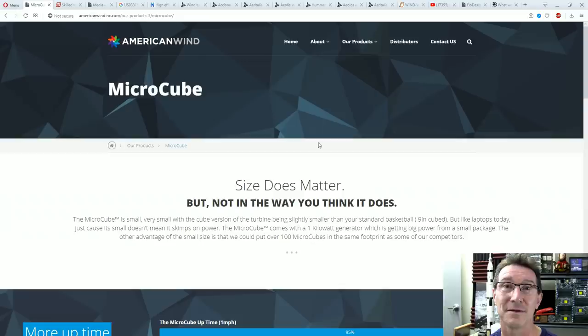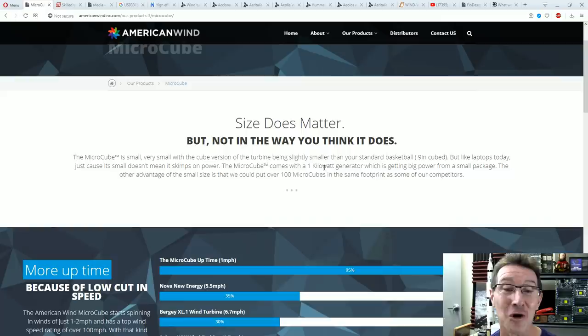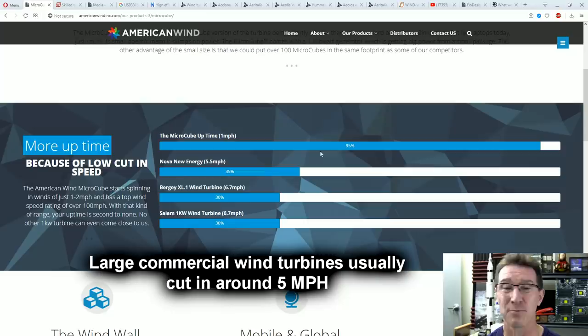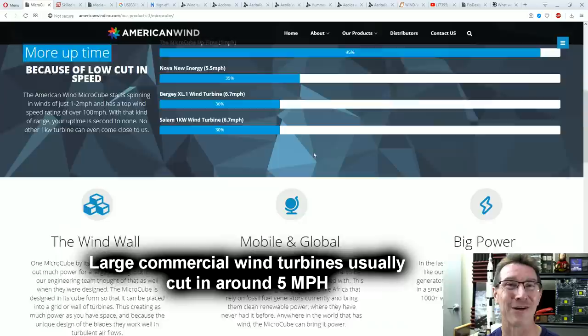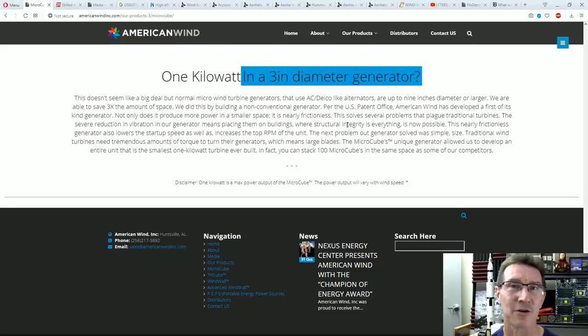Wow. So their product is what's called the micro cube and it's a nine-inch cube that can generate one kilowatt. Can you smell that? Yeah, bullshit. And they claim it does start spinning up at just one to two mile an hour wind, so that's actually pretty good.